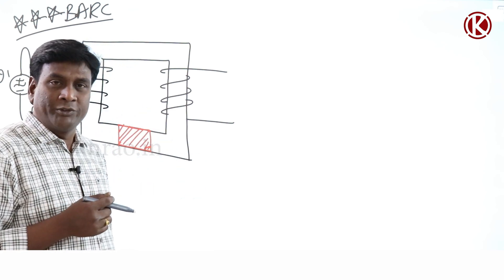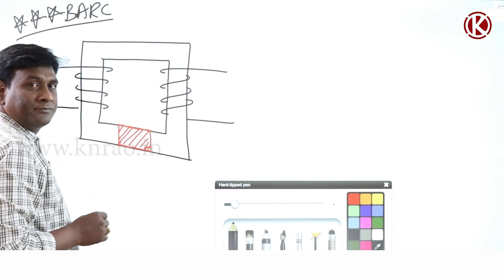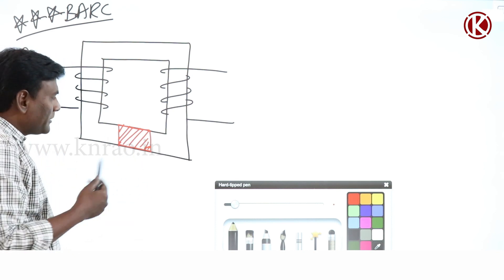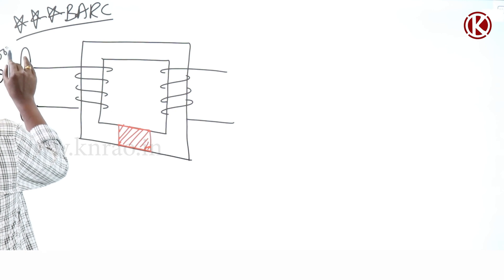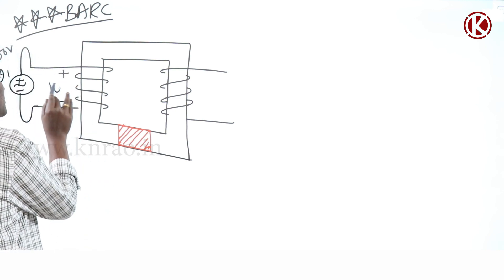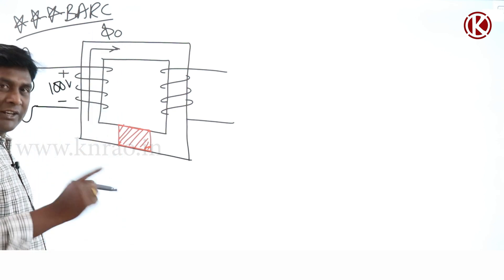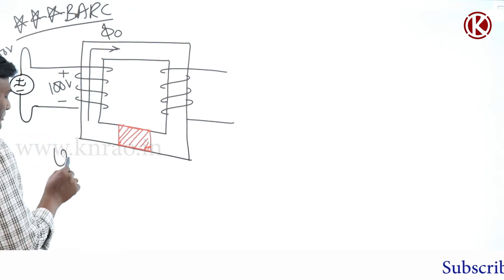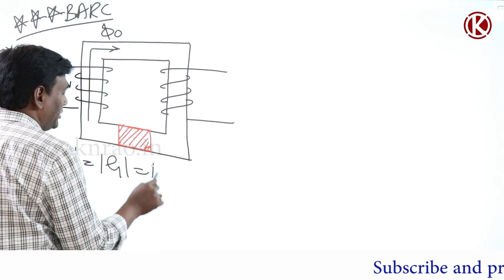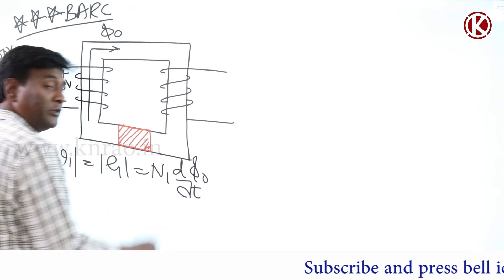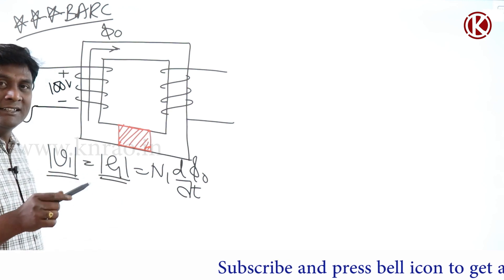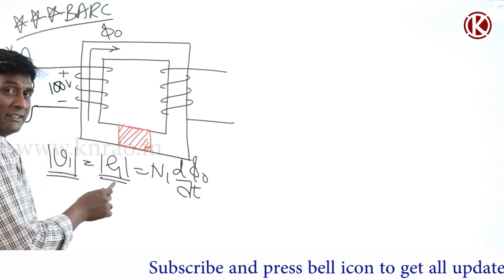Black represents the full transformer with complete magnetic material, and red represents the second case where part of the magnetic material is replaced with non-magnetic material. For example, this is 100 volts, so back-induced voltage should be 100 volts. My operating flux is Φ₀. The equation is: |V1| = N1 · dΦ₀/dt. Since V1 is constant in both cases, E1 should be constant, meaning the operating flux must be constant — 100 volts, 100 flux. That is the standard.